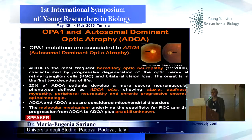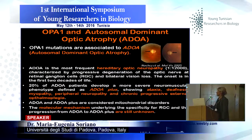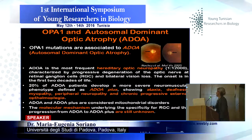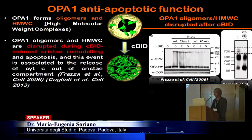Twenty percent of these ADOA patients develop a much more dramatic phenotype characterized by a neuromuscular phenotype with ataxia, myopathy, and other features. The molecular mechanisms that underline the specificity first for the retinal ganglion cells, and that explain the progression from ADOA to ADOA plus, are not known, but we think they depend on the anti-apoptotic function of OPA1.